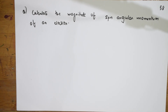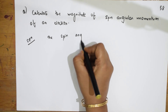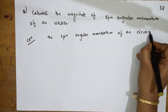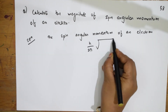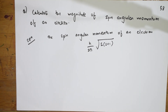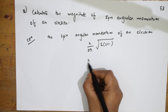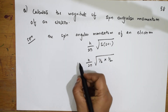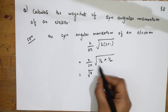Next: calculate the magnitude of spin angular momentum of an electron. The formula for spin angular momentum is (h/2π)√(s(s+1)). For an electron, s = ½, so substituting: (h/2π)√(½ × 3/2) = (h/2π)√(3/4) = √3·h/(4π), which simplifies to (√3/2)ℏ.